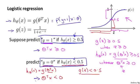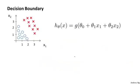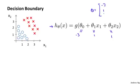Let's use this to better understand how the hypothesis of logistic regression makes its predictions. Suppose we have a training set like that shown on this slide, and suppose our hypothesis is h of x equals g of theta 0 plus theta 1 x1 plus theta 2 x2. We haven't talked yet about how to fit the parameters of this model — we'll talk about that in the next video. But suppose that, via a procedure to be specified, we end up choosing theta 0 equals negative 3, theta 1 equals 1, theta 2 equals 1, so my parameter vector theta is minus 3, 1, 1.